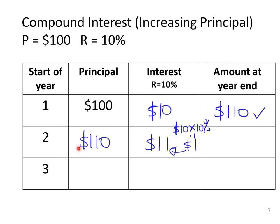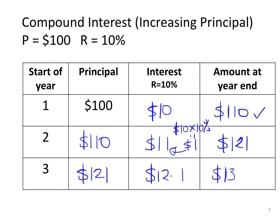At the end of the second year, the amount will be the sum of the principal and the interest, which equals $121. This becomes the principal of the third year, and the interest in the third year will be $121 times 10%, which equals $12.10. Finally, at the end of the third year, the amount will be $133.10.